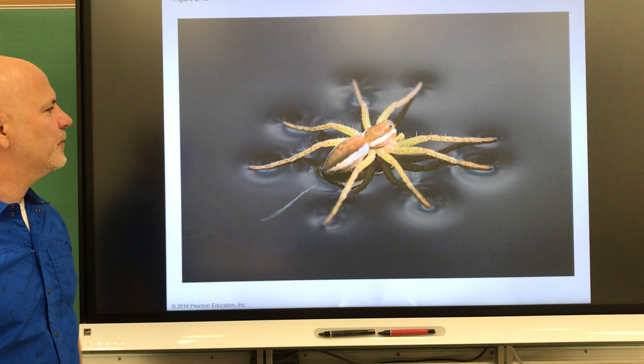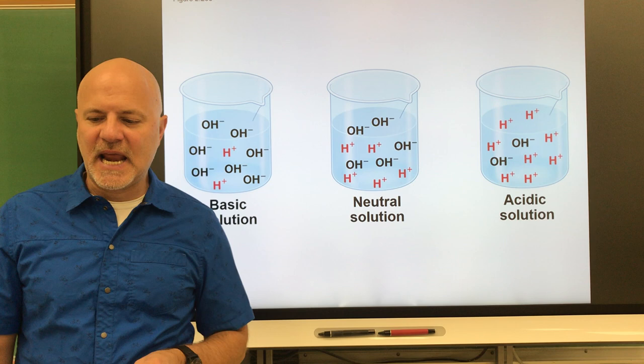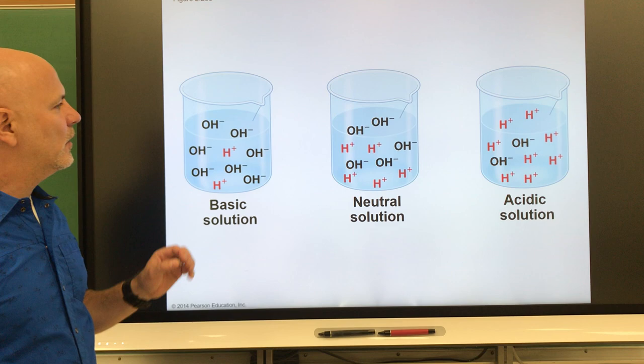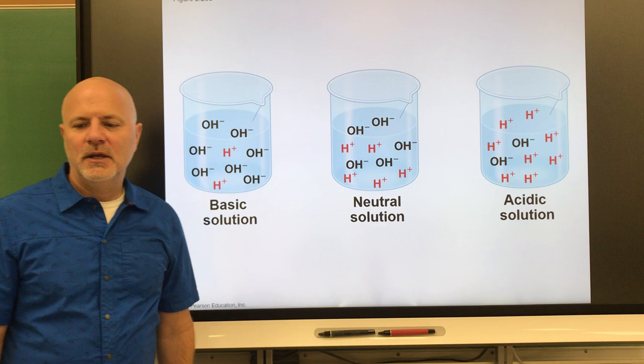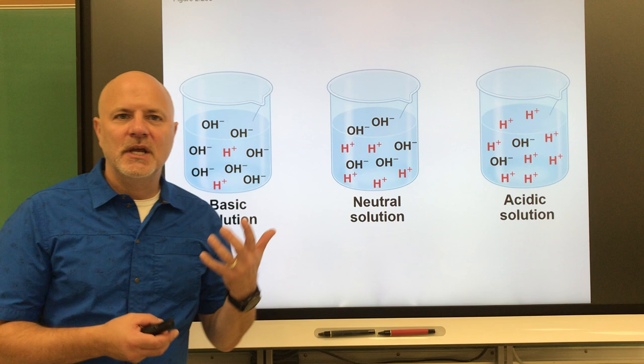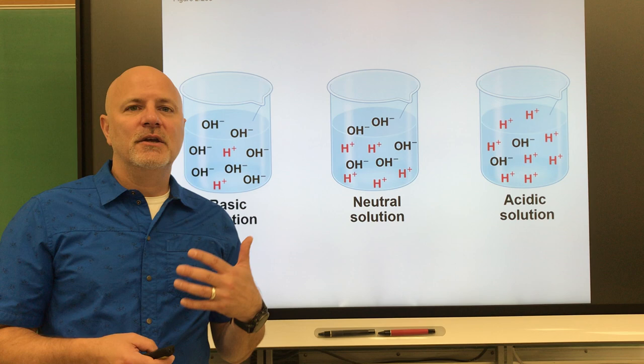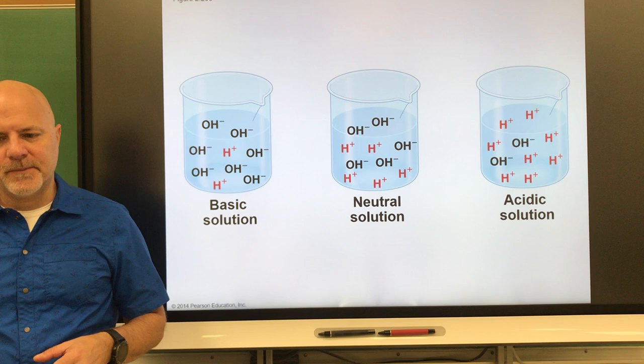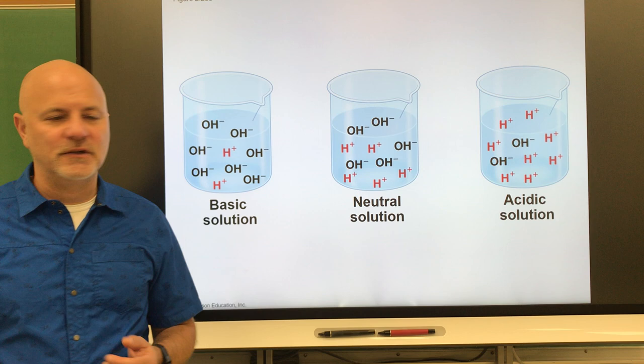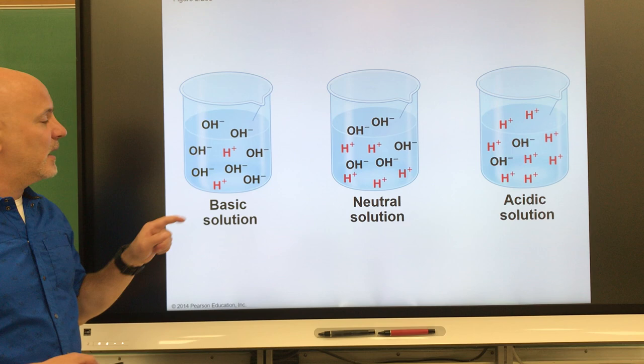Now let's look at acids and bases. An acid is a substance that releases hydrogen ions in a solution — in an acidic solution you can see a lot of hydrogen ions. For example, hydrochloric acid put into water will separate into hydrogen ions and chloride ions. Those hydrogen ions are what give acids their properties — acids taste sour to us and can leave bad burns.